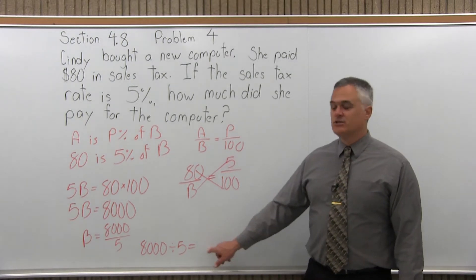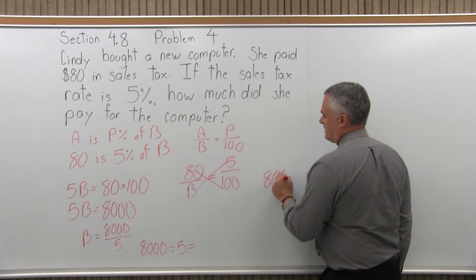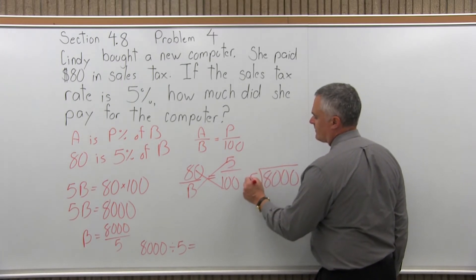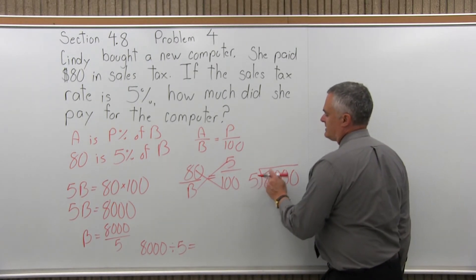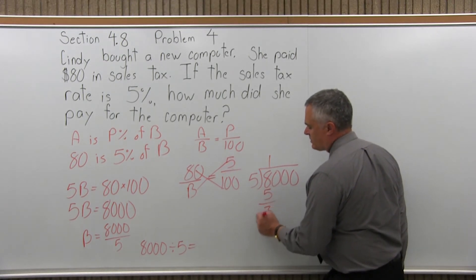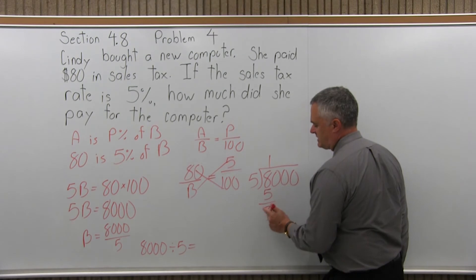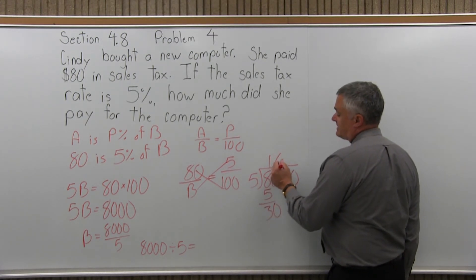Now, if your math teacher doesn't let you use a calculator, just do it out the long way. It's not that bad. So I have 8,000. How many times does 5 divide into it? Well, 5 divides into 8 only once. 1 times 5 is 5. 8 minus 5 is 3. Then you bring down the next digit, which is a 0.